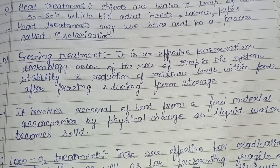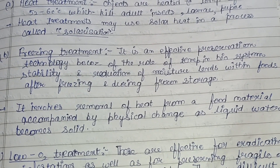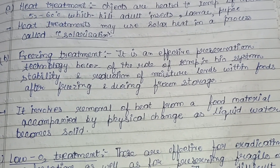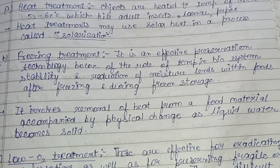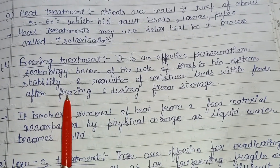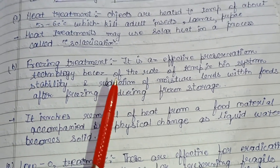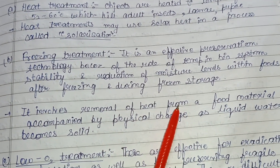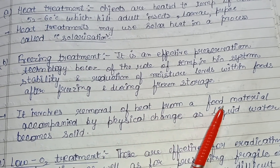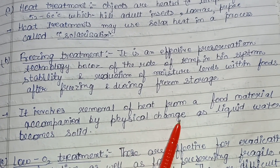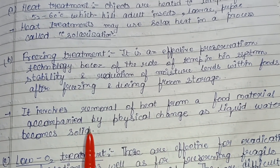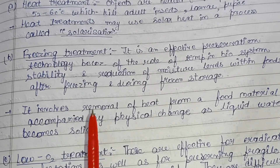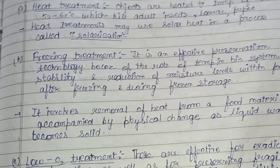Freezing treatment is also utilized for the control of bio deterioration. It is an effective preservation technology because of the role of temperature in biosystem stability and the reduction of moisture levels within food. It involves the removal of heat from a food material, accompanied by a physical change as liquid water becomes solid, providing unfavorable conditions for bio deterioration so it cannot grow.